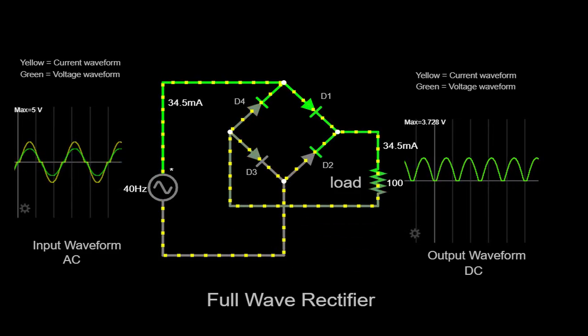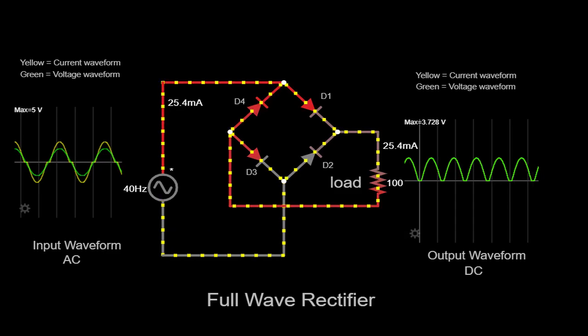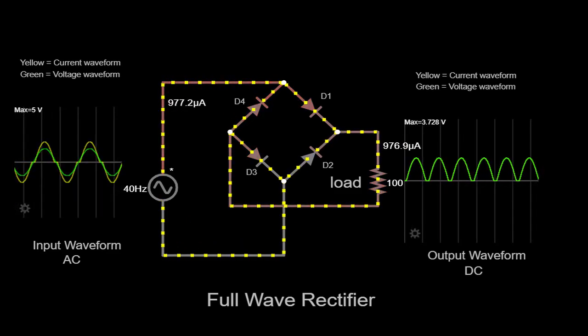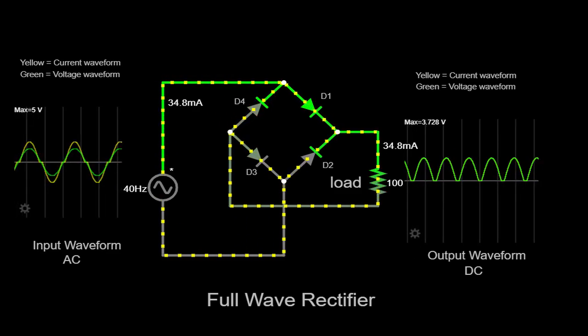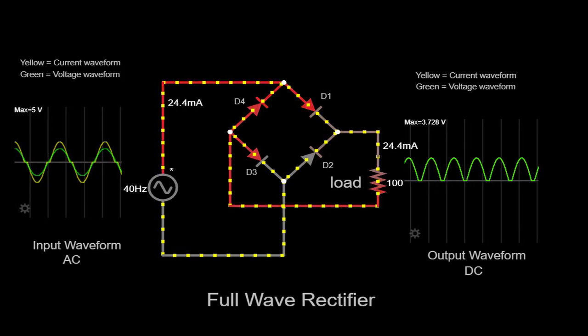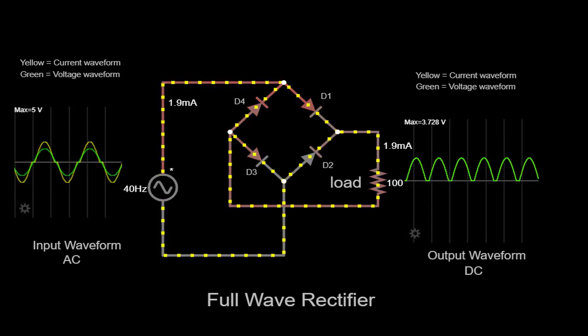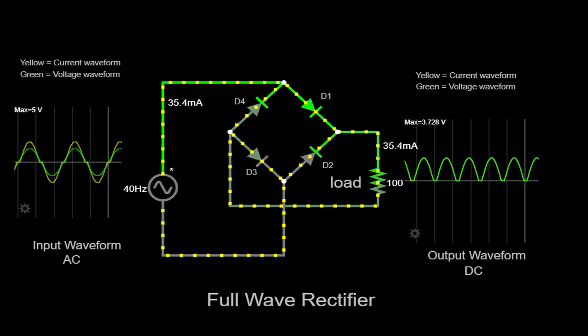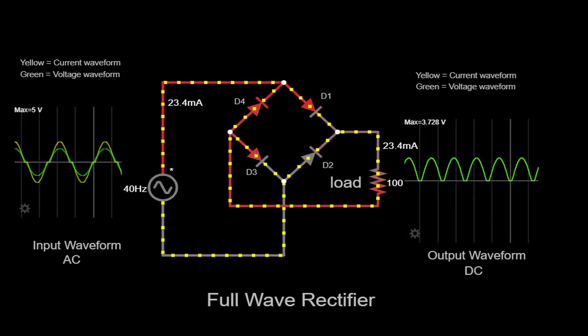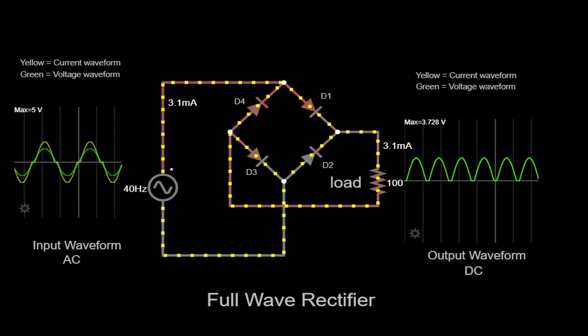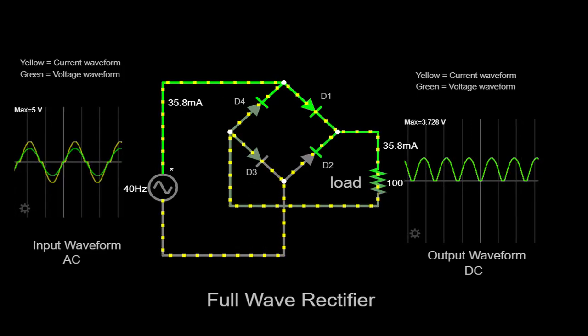By understanding the working principles of a full-wave rectifier, we gain insights into the conversion of AC to DC and its significance in various electronic applications. The rectified output provides a steady and usable DC voltage that can power a wide range of electronic devices, from simple circuits to complex appliances.